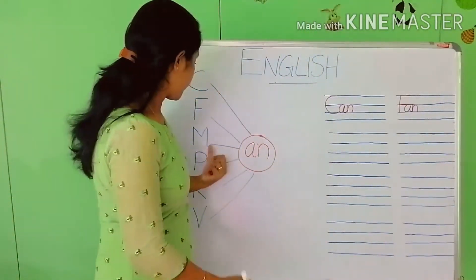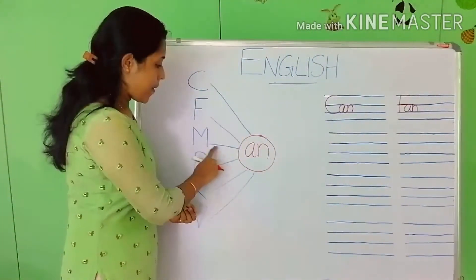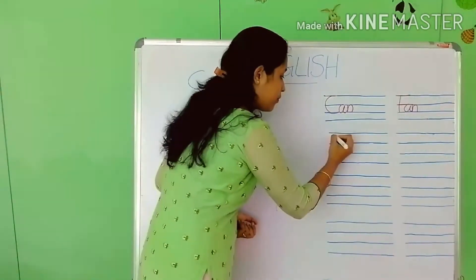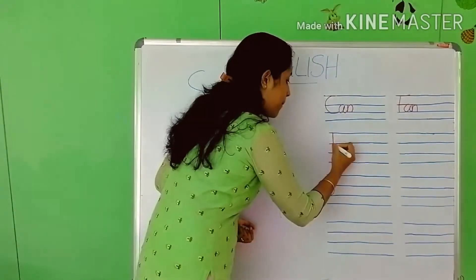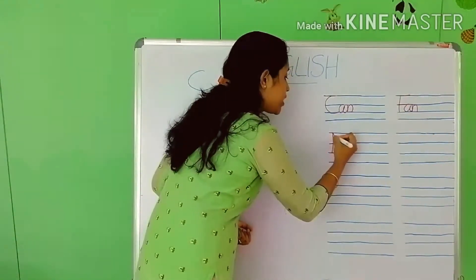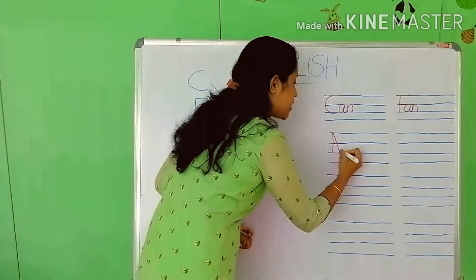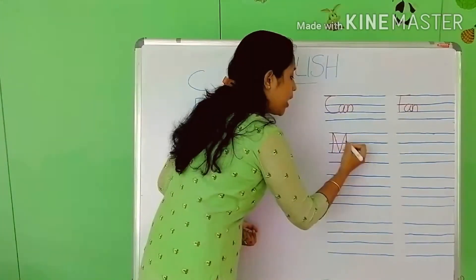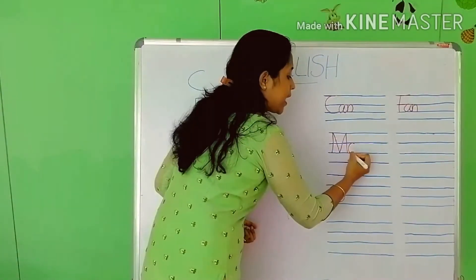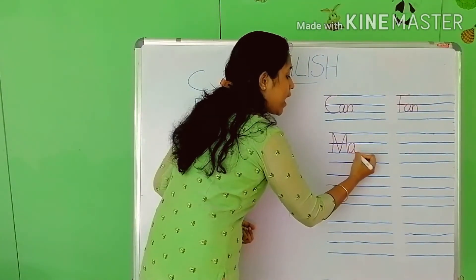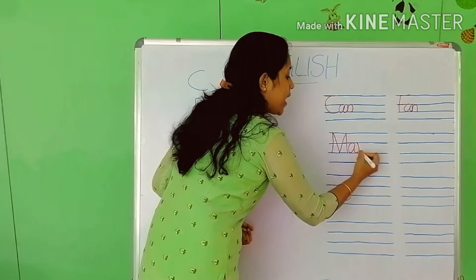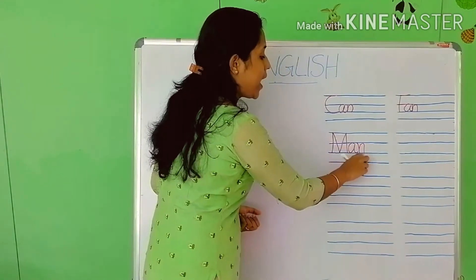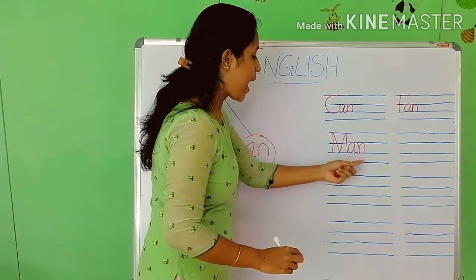Next — M, AN — 'man'. We write M first, then AN — A and N. M-A-N — 'man'.